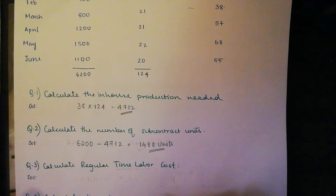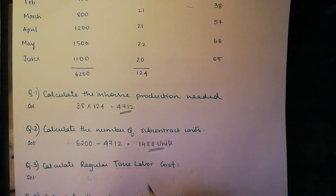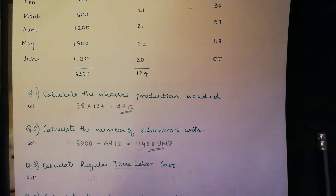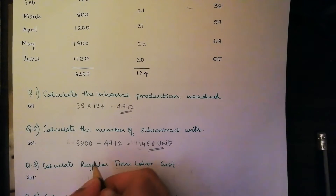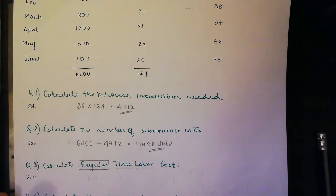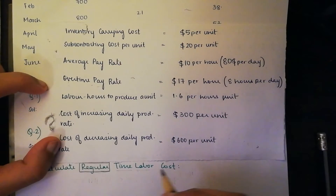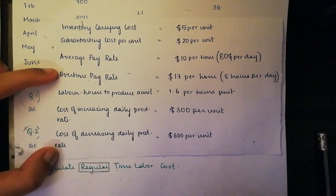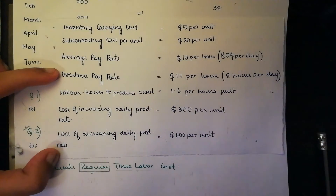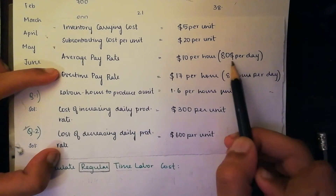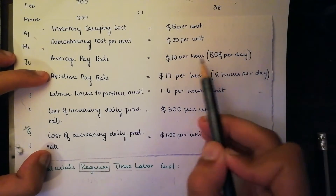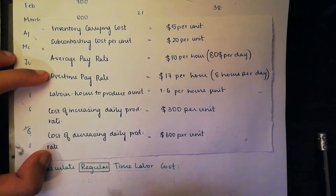Now we need to find the regular time labor costs — the cost for us producing within the company. We need to know what the regular rate is going to be. Looking at our data sheet that provides the different pay rates, our regular rate — our pay rate — is $80 per day, which is 8 hours a day at $10 per hour. So you take that $80 and multiply by the time: they will be operating for 124 days.